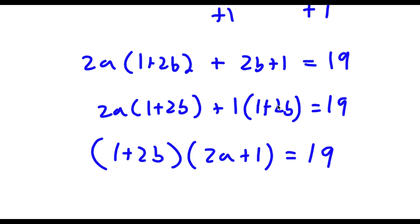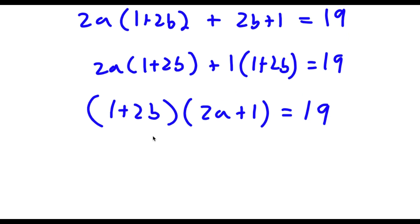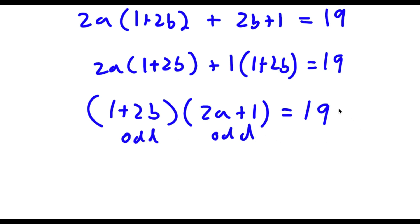Now as you can see, all three of these are going to be odd, because 2 times any number is going to be even, and an even number plus 1 is going to be odd. So the same goes with 2a and 2b — this is odd, this is odd, and 19 is also odd.